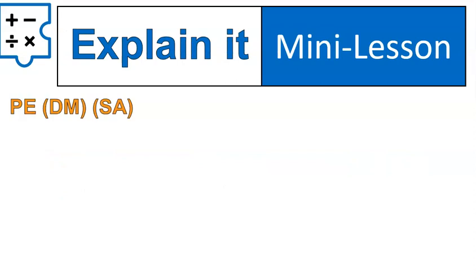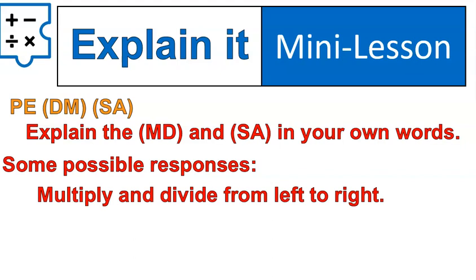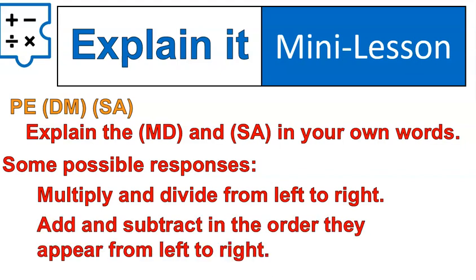This is the most common area where people make mistakes, so I want you to explain the order of operations in your own words. Try to explain it because explaining it means your brain has to process and understand it in a way that's meaningful to someone else — so seriously pause the video and try it out. Some possible responses: you might say you multiply and divide from left to right, or that you add and subtract in the order they appear from left to right. If it's something like that, you're in good shape.